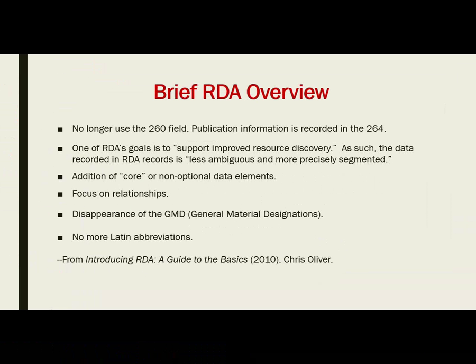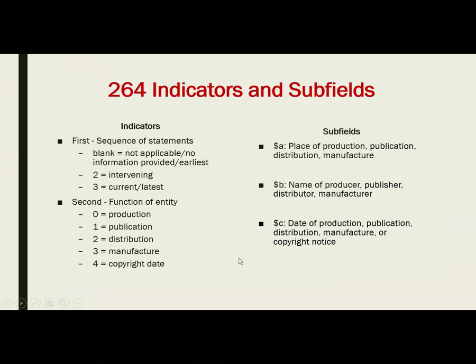In RDA we have a concept called core, or non-optional data elements — things that have to be included in our records. Within that, we have some things that are core-optional, where if the required element isn't there, we move on to the second choice. This brings us to the 264 field, and where people really seem to have the most confusion was not so much with the subfields — everyone seems to have a good grasp of those — but with the indicators. That's a really big change; this is part of the data becoming more segmented and more precise.